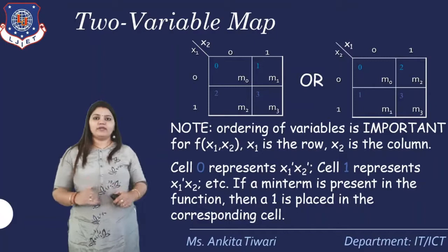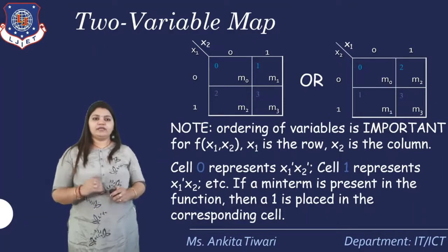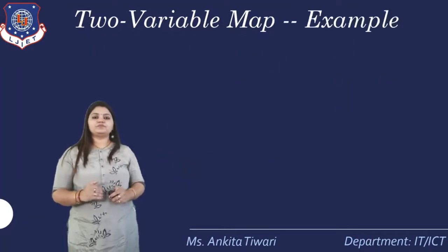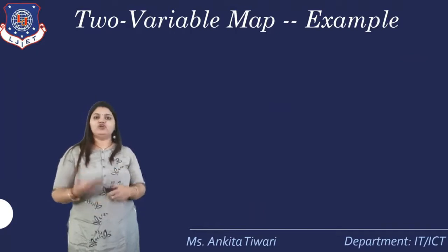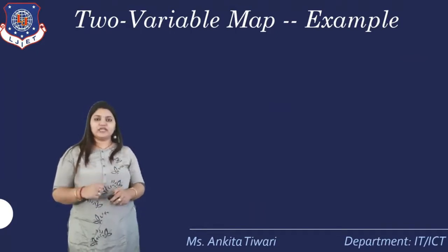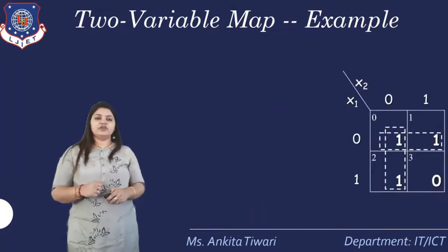If a minterm is present in this section, then a 1 is placed in the corresponding cell. If a minterm is present, it is represented by value 1. This is what 2-variable mapping is about. We will now take one example to understand how a 2-variable K-Map reduction is done.